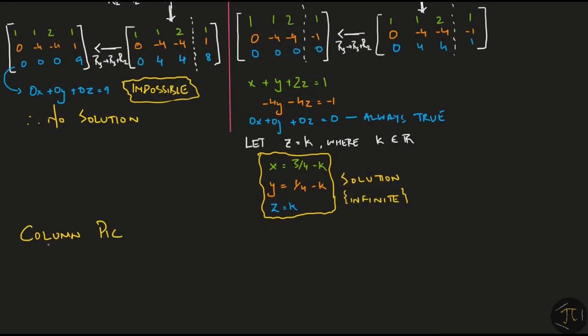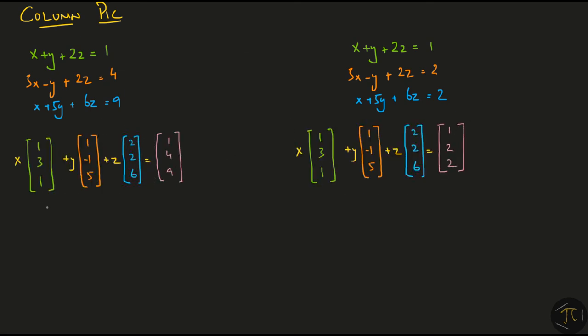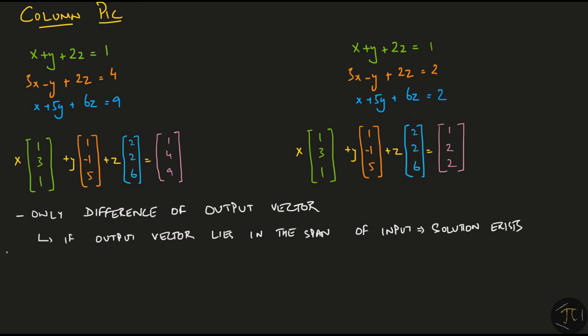I want to find some x, y, z such that the linear combination of the input vectors equals the output vector. The input vectors are the same in the two problems. The only difference is the pink output vector. Now, if the output vector lies in the span of the input vectors, we say that a solution exists. But if the output vector does not lie in the span of the input vectors, no solution exists.